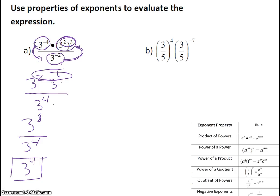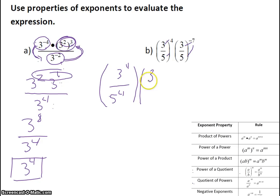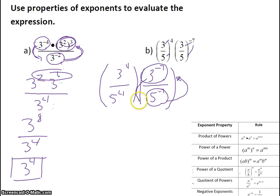For the next problem, we have fractions. It's going to be clear that we're going to use the power of a quotient property, which tells us that we can distribute our exponent. So I'm going to distribute my exponent to all the terms. I have 3 to the 4th over 5 to the 4th, and that's being multiplied by 3 to the negative 7th over 5 to the negative 7th. Whenever we have a negative exponent, we're going to flip-flop it between the numerator and the denominator. So this 5 to the negative 7 gets flip-flopped to the top, and 3 to the negative 7 gets flip-flopped to the bottom, and we make the exponent positive.